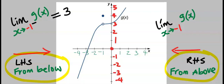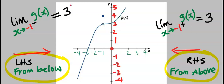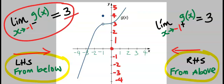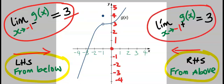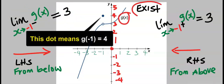Subsequently, approaching this limit from the right — also called from above — we find that g(x) from the right is also equal to 3. This one-sided limit gave us 3 from the left, and the right-side limit also gave us 3. We conclude that the limit of g(s) exists because both sides are equal.